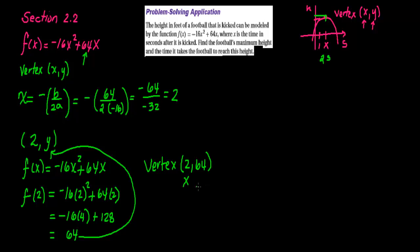Well, this is your x-value, this is your y-value. We said that your x-value—and it says it right here—x is the time in seconds after it is kicked. So this 2 means that 2 seconds after it was kicked, it reached this height. It reached a height of 64.